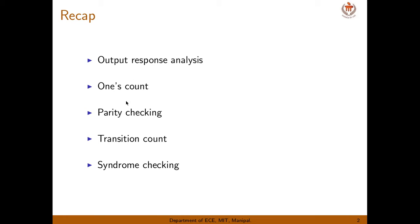The four techniques are: ones count, where we store the total number of ones; parity checking, where we store whether it is odd or even parity; transition count, where we store the number of transitions from 0 to 1 and 1 to 0; and syndrome checking, where a syndrome is calculated by k divided by 2 power n, where k is the number of minterms and n is the number of inputs. Each one has a demerit called fault masking, as explained in the last tutorial.